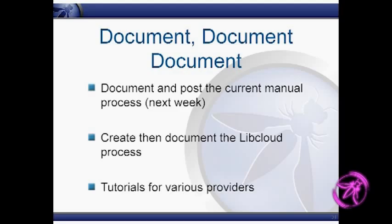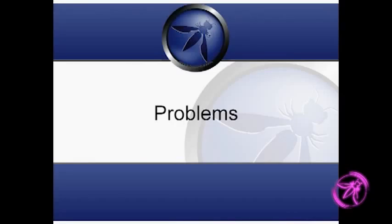Document, document, document. Next week when I'm not working, I'm going to document and post the current manual process so if you want to do this for yourself after next week, the process will be there — you can follow the steps and it should work. The next thing after that is to create and document how the libcloud process will work — it should be fairly simple Python. And then I'd like to write tutorials for various providers. I've only tested this on Rackspace so far, but I want to write tutorials for at least Amazon and Rackspace, the two biggies, so that if you already have an existing Amazon key and want to make this work, fine — or if you use Rackspace, fine. Unfortunately the documentation is a little thin right now, but it will get there.